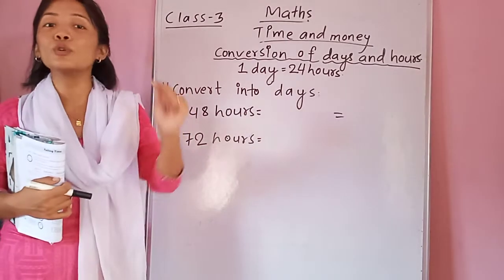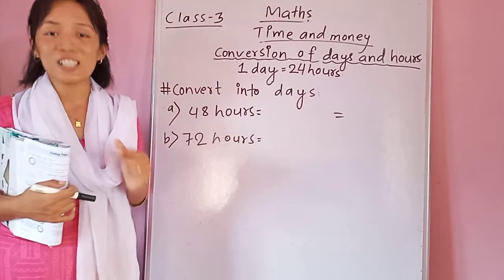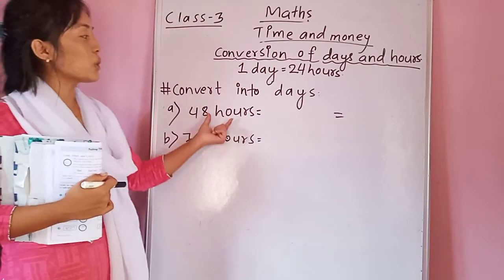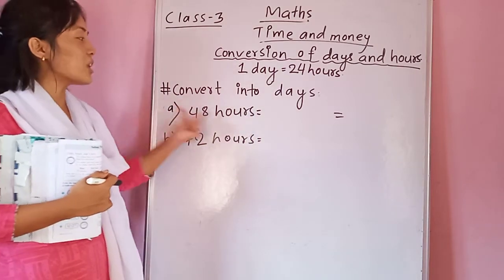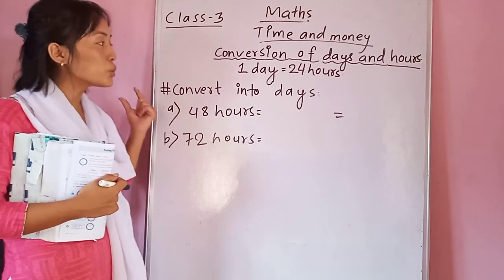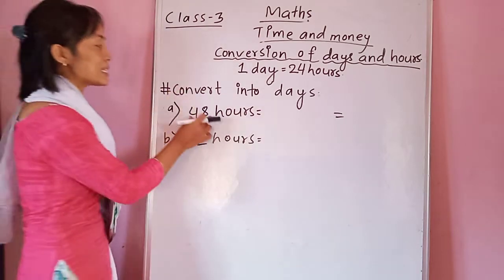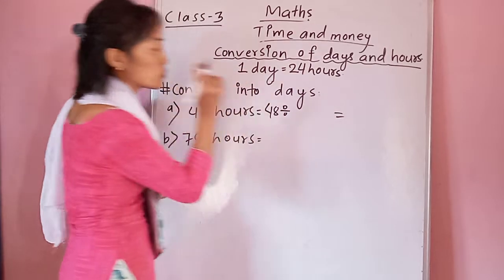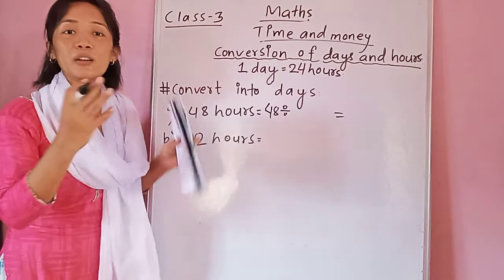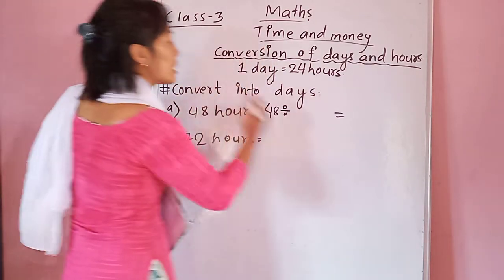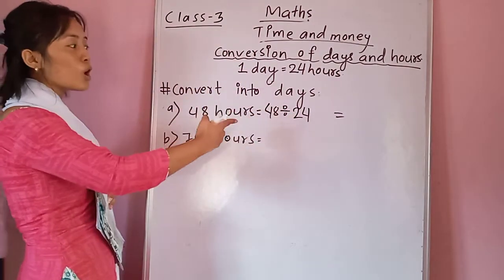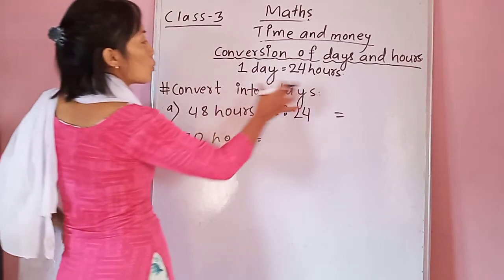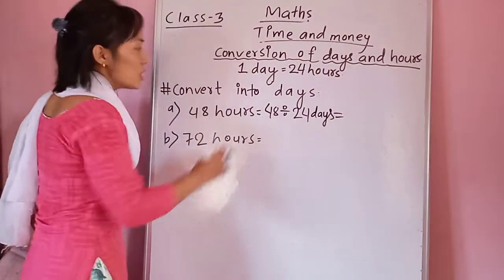When converting a smaller unit into a bigger unit, you have to divide the given number by the relation. What is the relation between hours and days? It is 24. So you divide the given number by 24. After dividing, the unit will change — from hours it becomes days. So here you divide the given number by 24 to convert it.